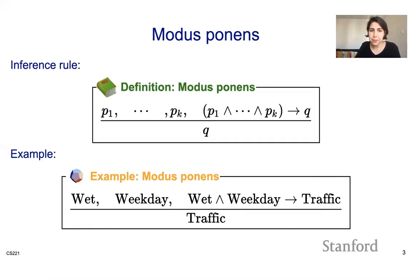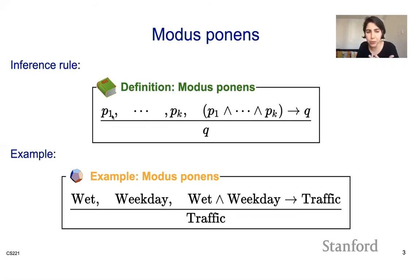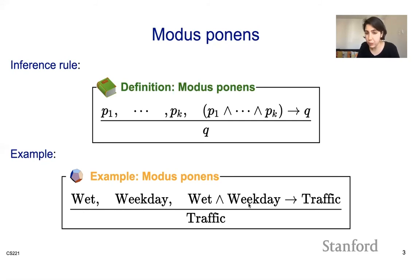That's a horn clause. Now I'm going to expand the idea of modus ponens. We talked about modus ponens being of the form: p, and p implying q, gives us q. The more general form of modus ponens is: having p1 through pk, and p1 through pk together implying q, gives us q. For example, if it is wet and it is a weekday, and if it is wet and a weekday there is traffic, then we can infer traffic.